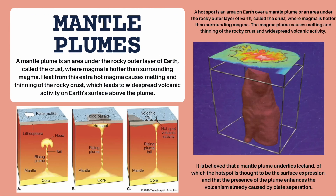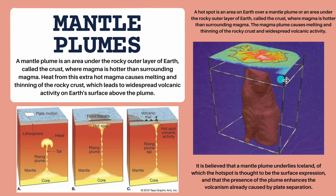A mantle plume is an area under the rocky outer layer of Earth — the crust — where magma is hotter than the surrounding magma. Heat from this extra-hot magma causes melting and thinning of the rocky crust, which leads to widespread volcanic activity on Earth's surface above the plume. A hot spot is an area on Earth above a mantle plume where this same process occurs. An example of a mantle plume is Iceland — that's why Iceland has blue lagoons and hot springs that stay heated.